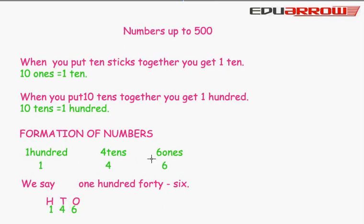How we can write a three digit number? 1 hundred, 4 tens, 6 ones. We can say 146.